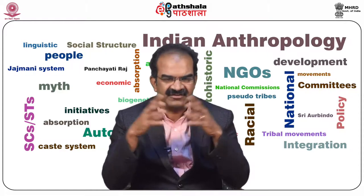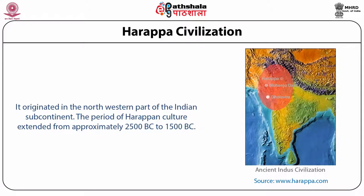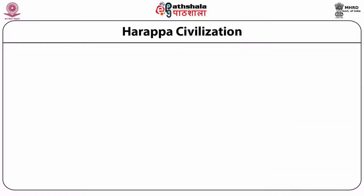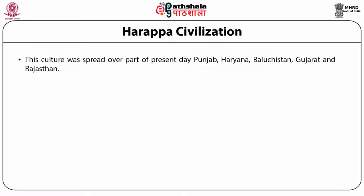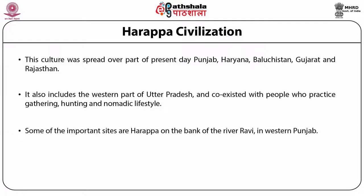We should also see how the Harappan Civilization started. The Harappan Civilization is very famous and began in the northwestern part of the Indian subcontinent. This period extended from 2500 to 1500 BC. The Harappan Civilization can be found in present-day states like Punjab, Haryana, Baluchistan, Gujarat, and Rajasthan, and parts can also be found in Uttar Pradesh. Some of the important sites are on the banks of the river Ravi in western Punjab.